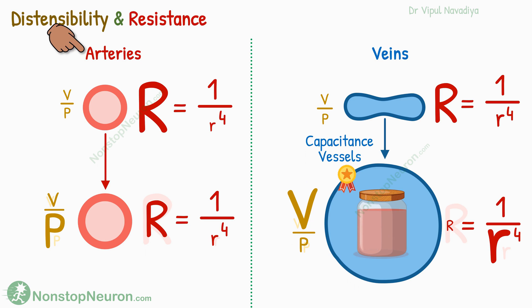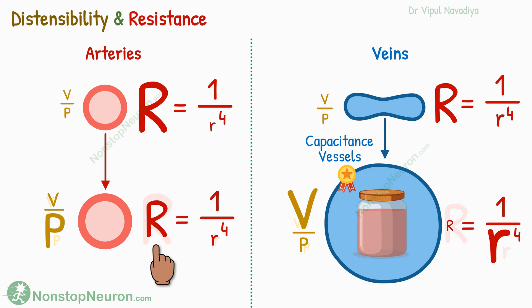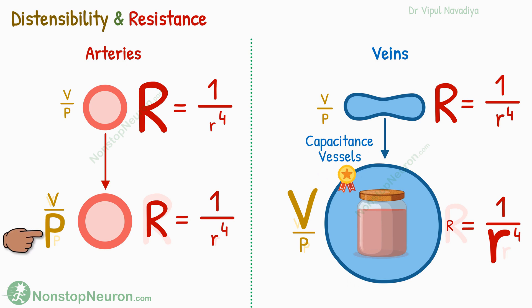Now come to arteries. They are less distensible, which means they don't expand much even with a marked rise in pressure. As they don't expand much, their radius does not increase as fast. Yes, the fourth power is applicable here also. But remember basic math—the power multiplies the impact of the base, but here the radius is showing minimal change. So without much change in the base, even the fourth power cannot produce much impact. So arteries continue to provide high resistance even with increasing pressure. There is a little bit of fall in resistance here too, but compare it with veins—veins gave up on resistance too easily at small pressure rises. But arteries don't give up on providing resistance even at high pressure. And that earned them the award of resistance vessels.